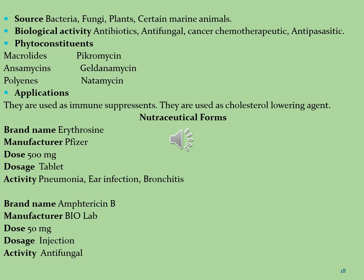Polyketides also have applications as immune system suppressants and cholesterol-lowering agents. Important pharmaceutical brands include: Erythromycin, manufactured by Pfizer Nutraceuticals, dose 500 mg per day in tablet form, used for pneumonia, ear infections and bronchitis. Amphotericin B, manufactured by Bio-Watering Nutraceuticals, dose 50 mg per day in injection form, works as an antifungal agent.